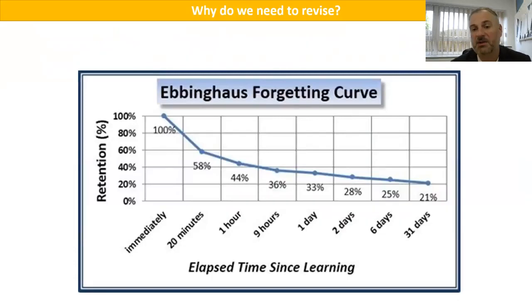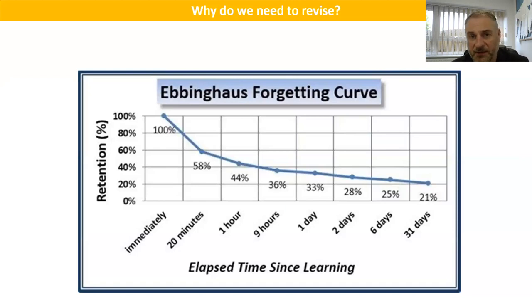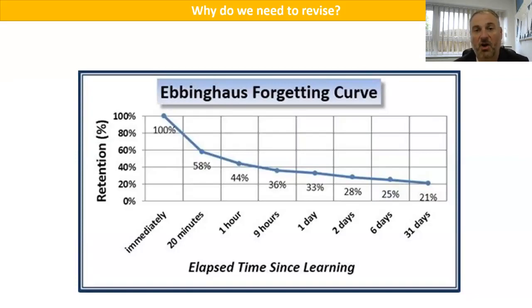This is called the Ebbinghaus forgetting curve. Within 20 minutes of being told something, you start to lose the vast majority of your memory — 58% is left after 20 minutes, 44% after an hour, 33% after a day. Over time you can imagine how little you've retained. This is a massive problem unless you go back and repeat, because within a month four-fifths of what you were told in the lesson has gone. You cannot survive your A-levels doing that — it is not possible.